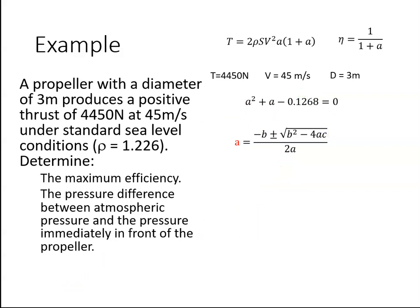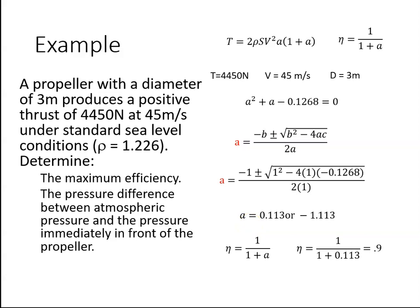When I plug them into the equation, I get A to be 0.113 or minus 1.113, and we always take the positive value. A negative value gives me a meaningless number for efficiency. So we take the positive value of A and plug that in. We get an efficiency of 90%. That's this part of the question answered.